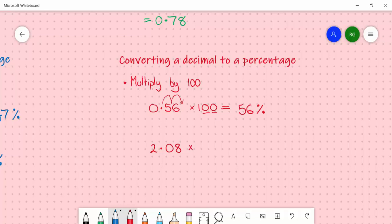Likewise, if we have 2.08, we move that decimal place two spots. And we get 208%.